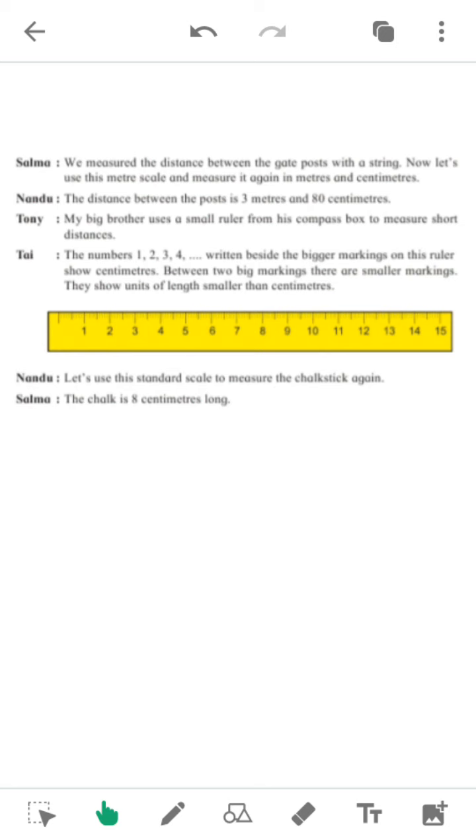The number 1, 2, 3, 4, 5 written besides the bigger marking on this ruler shows centimeter between two big markings. There are smaller markings. They show unit of length smaller than centimeter. Let's use the standard scale to measure the chalk. The chalk stick again. The chalk is 8 centimeters long.